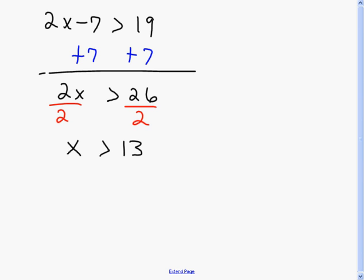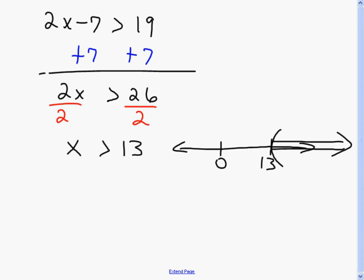On the number line, here's 0 and 13 is up to the right. Since we have a strict greater than, I use a parenthesis at 13 and shade everything to the right. In interval notation, that's parenthesis 13 to positive infinity. It's whether the number you divide by is positive or negative that determines whether you reverse that inequality — so watch your signs carefully.